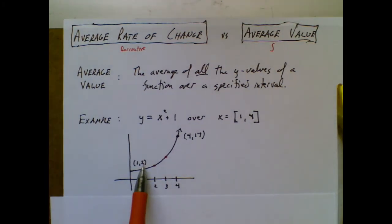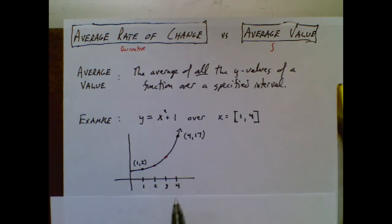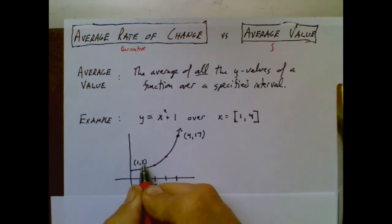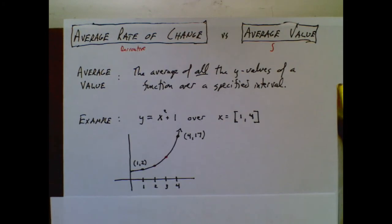Here's the very first y-value. It's a 2. The very last y-value is a 17. I guess right here, through a little mental math, that y-value would be 5. Plug in a 3 to that equation, that y-value would be a 10. So we have a y-value of 2, 5, 10, and 17.